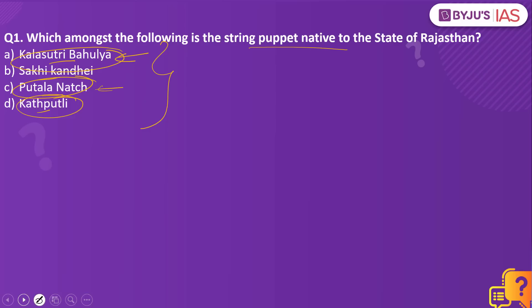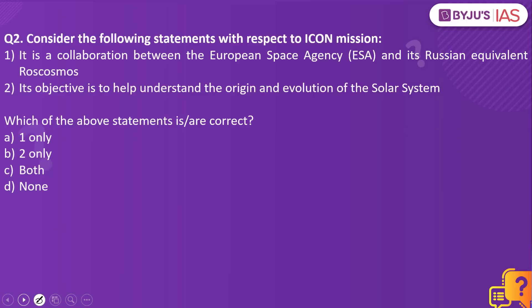Next practice question: Consider the following statements with respect to the ICON mission. Statement one: it is a collaboration between the European Space Agency and its Russian equivalent Roscosmos. Statement two: its objective is to help understand the origin and evolution of the solar system. The answer is none — both statements are incorrect.